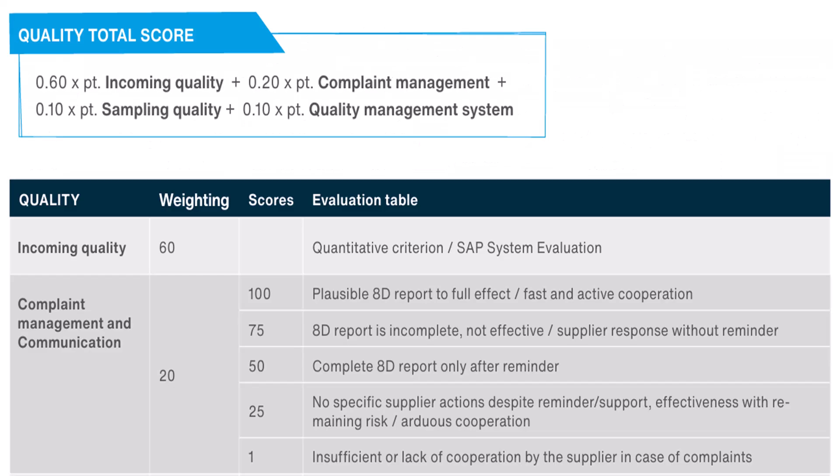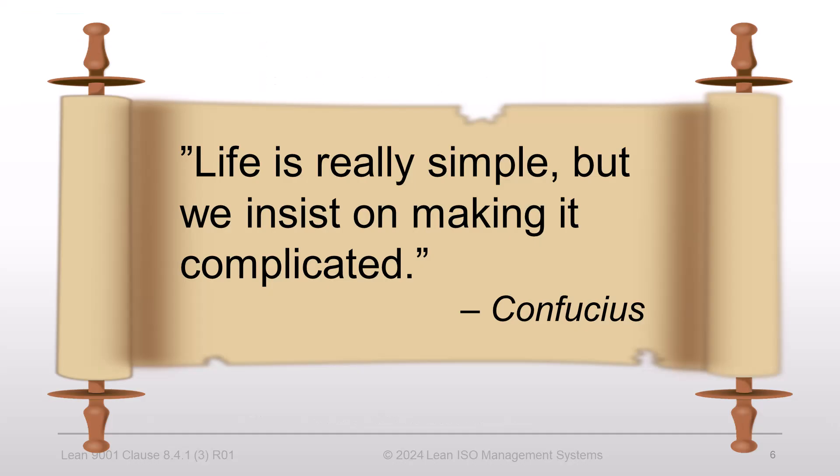Another example shows a procedure where the company graded supplier responses on a 1 to 100 scale — the link is also below. By now you may be scratching your head asking where I'm going with this. In the 5th century BC, the Chinese philosopher Confucius said: 'Life is really simple, but we insist on making it complicated.' I think the same when looking at all these confusing models for reporting deliveries, rejects, and late responses from suppliers.